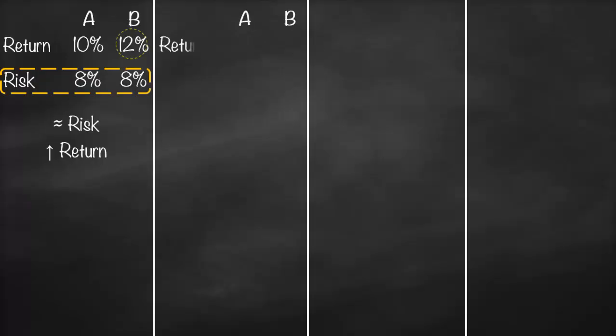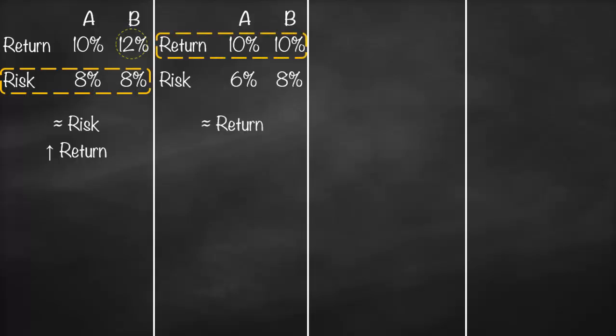Let's look at another example with investments A and B. The expected return for both A and B is 10% — the same return. The risk for investment A is 6% and for investment B is 8%. If we have the same return, we choose the lowest risk. Therefore, we choose investment A.